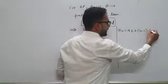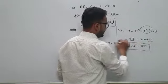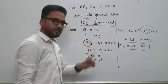42 as it is, N into minus 10 will be minus 10N, and minus 1 into minus 10 is plus 10. So 42 plus 10 is 52 minus 10N. So AN is equal to 52 minus 10N will be the required answer.